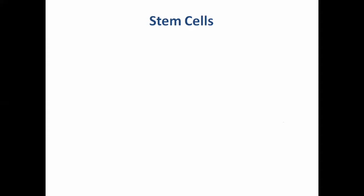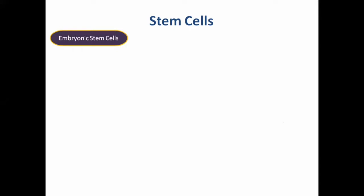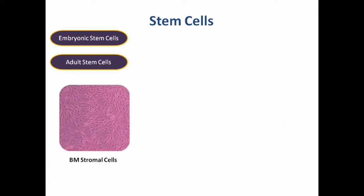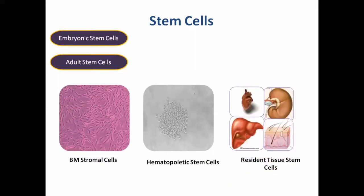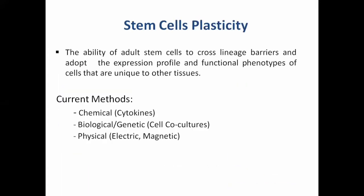Stem cells are a special type of cells that have the ability to differentiate into multiple lineages like bone cells, fat cells, and cardiac cells. There are two broad categories of stem cells: embryonic stem cells and adult stem cells. Adult stem cells are further divided into bone marrow stromal cells, hematopoietic stem cells, and resident tissue stem cells. Stem cells can be differentiated into multiple lineages by using chemical, biological, and physical methods.